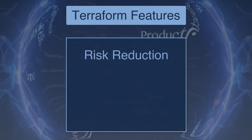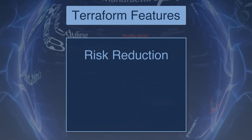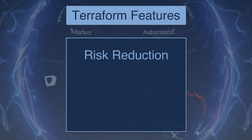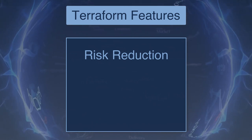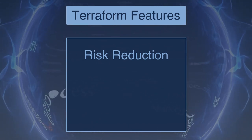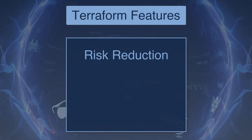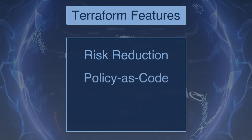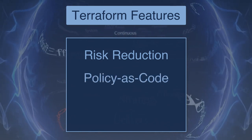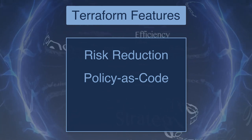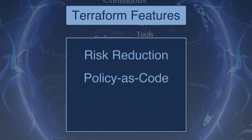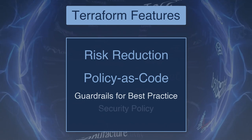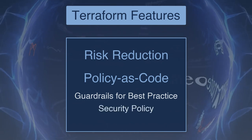As some teams begin to move fast with automation, while human error is decreased, more risk is introduced of either something going wrong at a large scale or abuse of the automated system. Terraform includes a policy as code framework that is customizable around governance and compliance controls. Types of policies include guardrails for best practice, security policy, and operations governance.